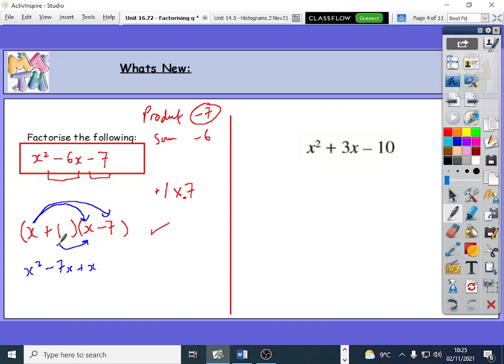And then when I'm collecting all these together I'll get x squared minus 7 plus 1, minus 7 plus 1 is minus 6x, and that's minus 7.